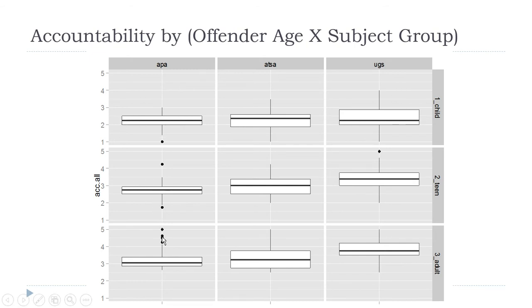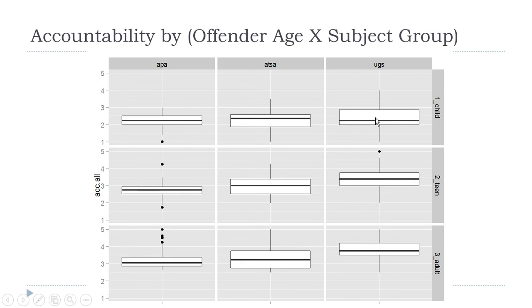We can see the medians, outliers, and get an idea of variability. The dependent variable is accountability ratings — participants were asked how accountable for his actions they think the offender is. When the offender was a child, the APA gave very low accountability, ATSA gave slightly higher, and undergrads had slightly lower median accountability but more variability.